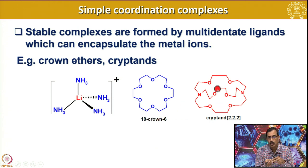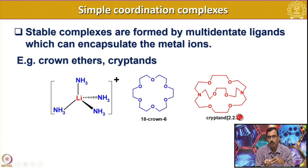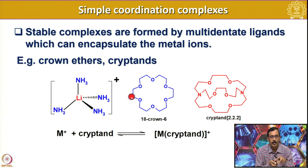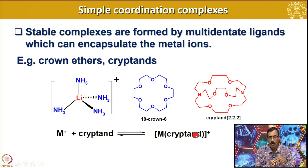In this case we have 2,2,2 oxygen atoms in between the nitrogen atoms, so it is called cryptand-2,2,2. A typical reaction: you take a cation and put it into the cryptand and it can form a stable complex.